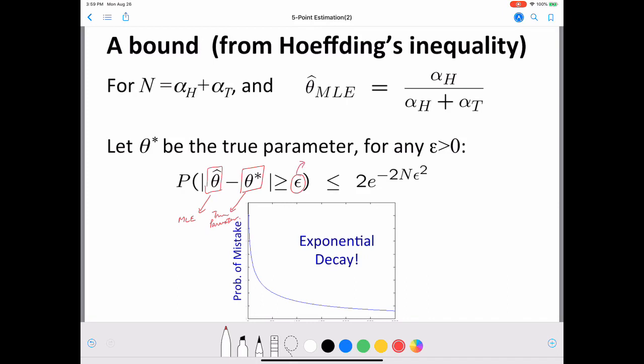Epsilon is the amount of error that you are willing to allow in your MLE calculation. So here we can see that we are trying to limit the error to epsilon in the MLE calculation. The difference between MLE and the true parameter, here we are saying we limit it to epsilon. And then we are saying that probability of the difference between the estimated value and the true value greater than or equal to epsilon.